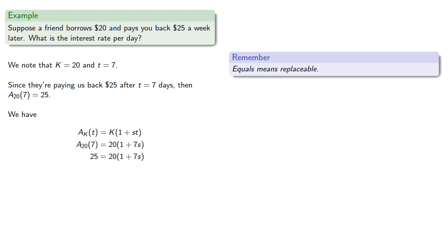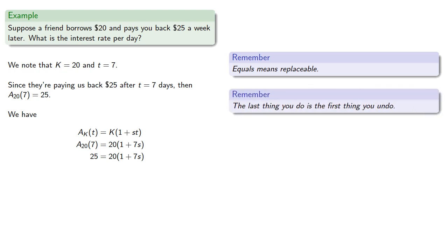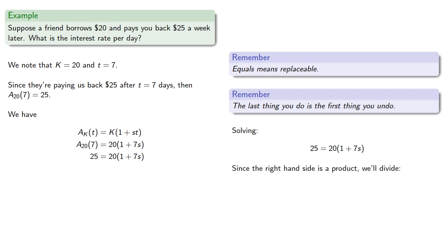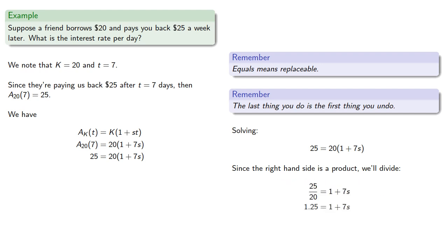To solve an equation, the key idea is: the last thing you do is the first thing you undo. On the right, we're multiplying by 20. Since the right-hand side is a product, we begin by dividing both sides by 20. Then we subtract 1 and divide by 7 to get s, our interest rate per day, which we convert into a percentage by multiplying by 100, rounding to 3.6%.